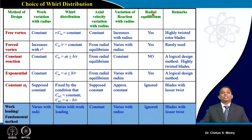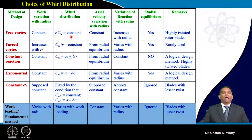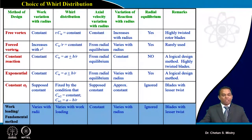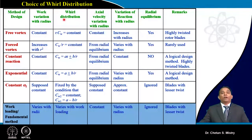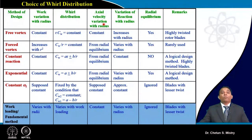We realized there may be chances for the degree of reaction to go to zero or even negative with the free vortex design. To overcome these limitations, we opted for the forced vortex design approach, where work variation is a function of r², and whirl distribution follows Cw/r = constant. Axial velocity is calculated based on radial equilibrium.